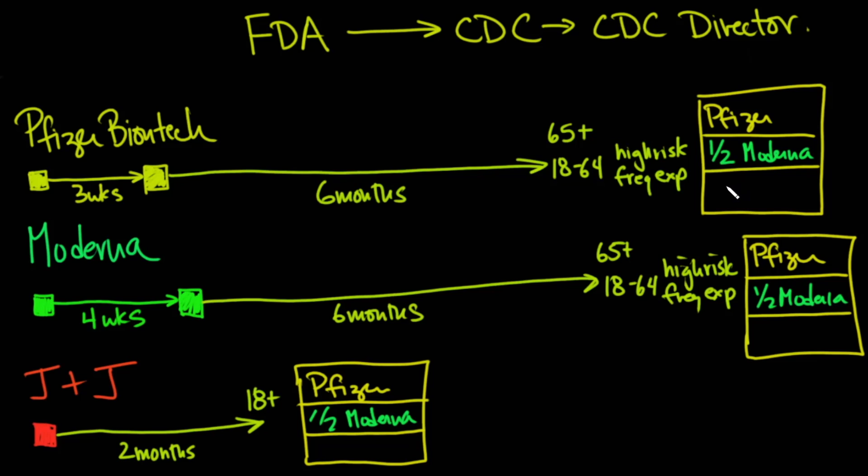And also, you can get the Johnson & Johnson as a booster if you got Pfizer before, the Johnson & Johnson booster if you got Moderna before. And of course, you can get the Johnson & Johnson if you got the Johnson & Johnson before.